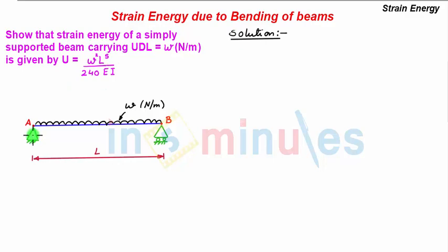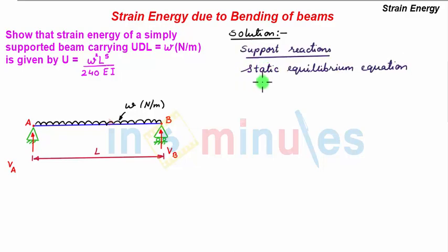First let us consider two vertical support reactions and assume those two support reactions are upward denoted by Va and Vb at point A and B respectively. The first step is to determine the support reactions Va and Vb by using static equilibrium equations. We have the first equation: summation of M about point A equals 0.